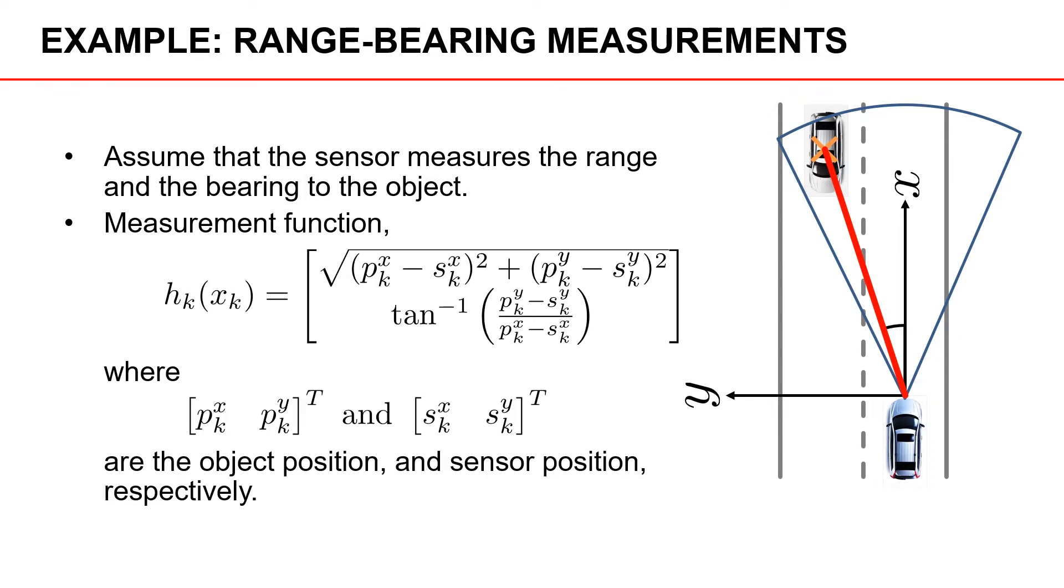This can be described by the following measurement function where PX and PY is the object's position, and SX and SY is the sensor's position, both at time K. So in the measurement function we have first the Euclidean distance from the sensor position to the object's position. That's given by the top expression, and then the inverse tangent expression describes the angle or the bearing from the sensor to the object.